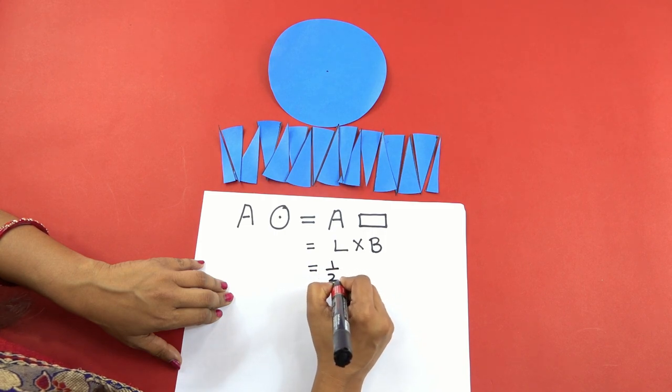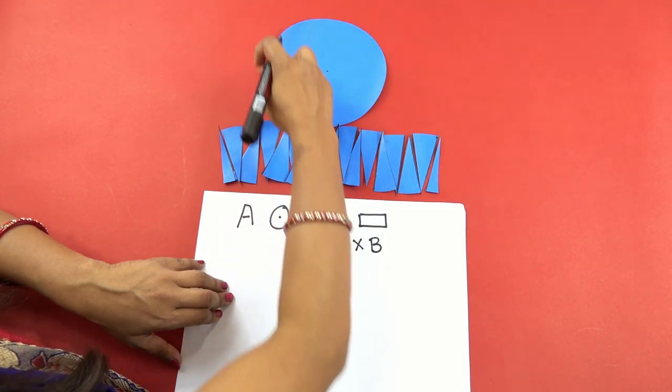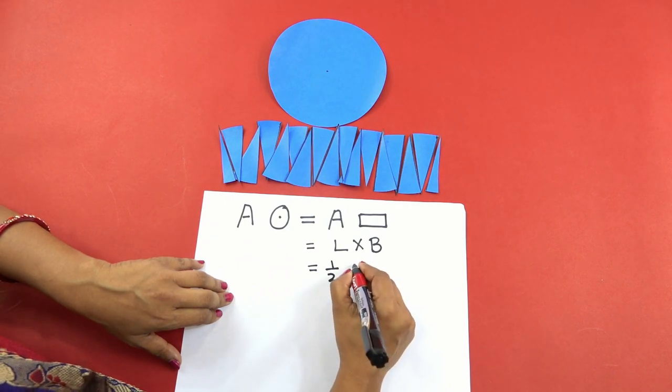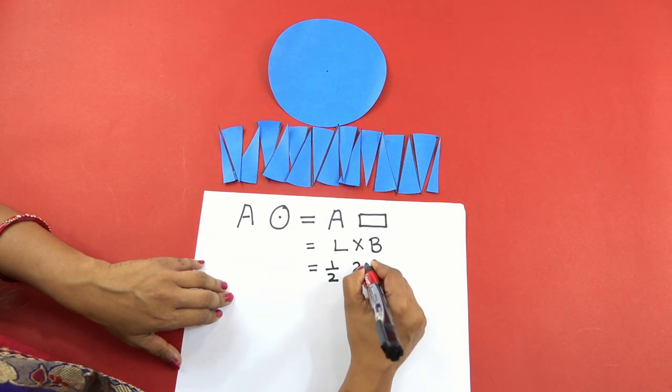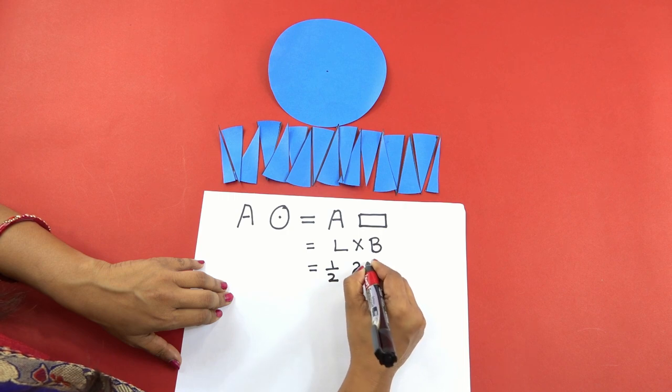Now the circumference is given by the formula 2πr.